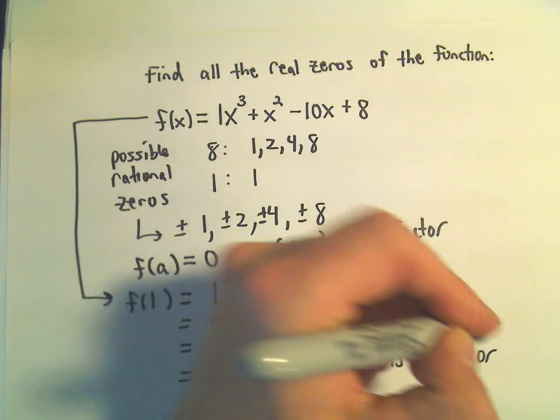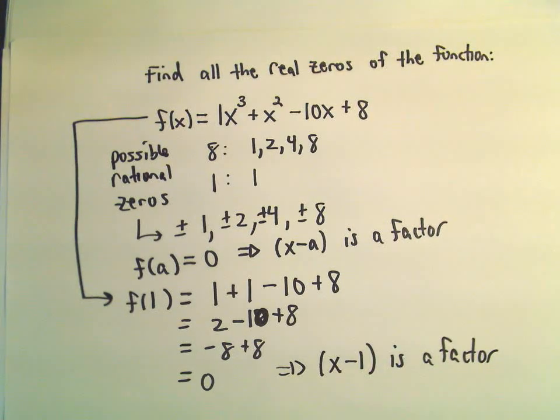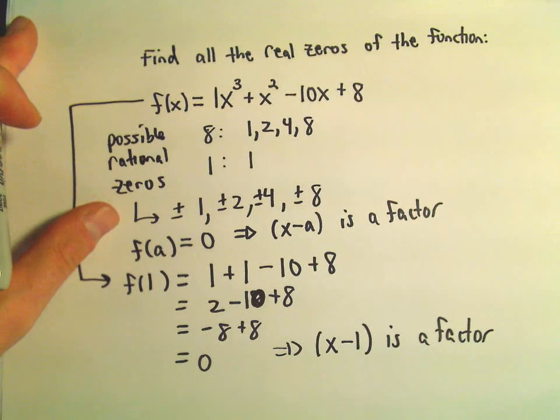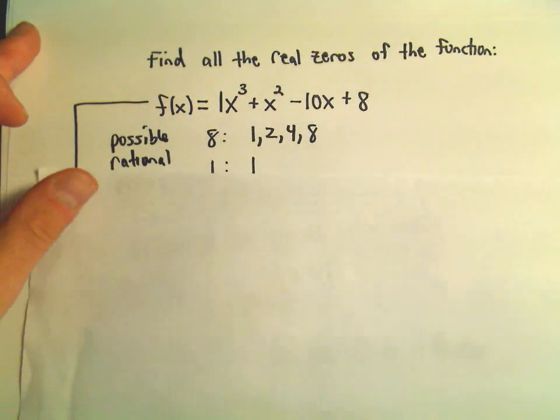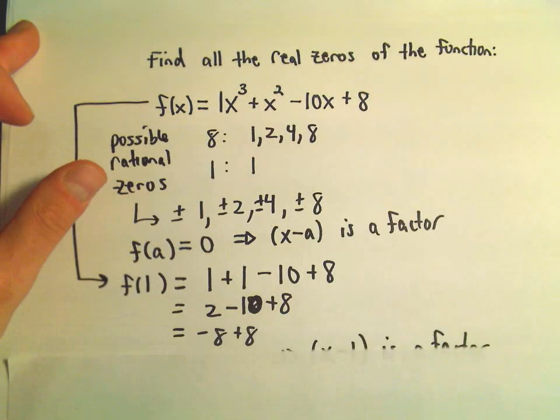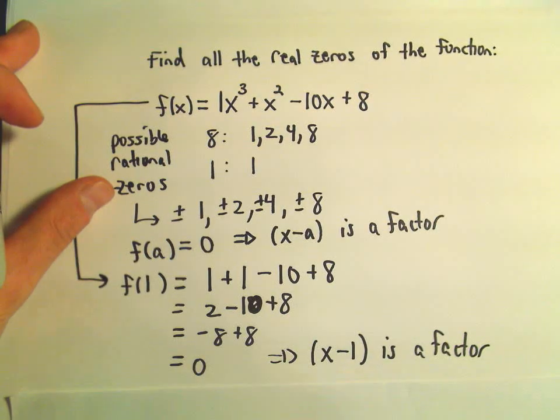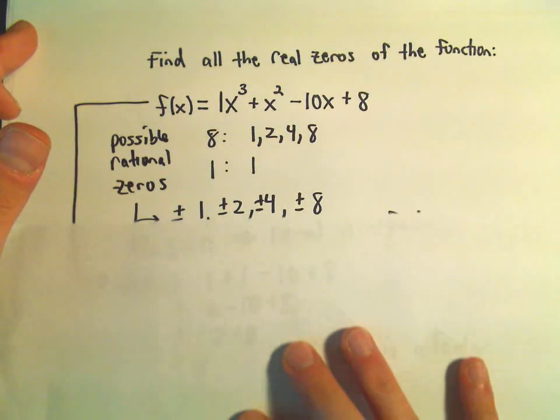So now what I'm going to do is I'm going to do long division. I'm going to take my original polynomial, x cubed plus x squared minus 10x plus 8, and I'm going to divide it by x minus 1. And I'm going to do that using synthetic division.